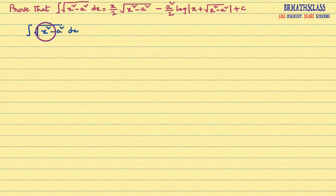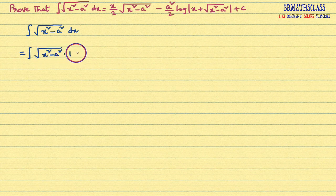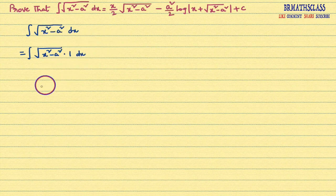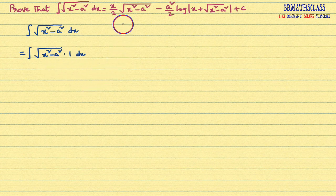First I will consider the question: integral of root over x square minus a square dx. I will write this as integral of root over x square minus a square into 1 dx. Root over x square minus a square can be written as root over x square minus a square into 1. We write it like this because we want to use the integration by parts formula to do this integration.